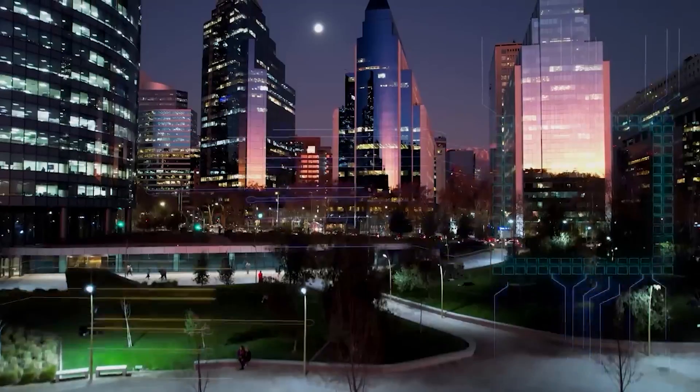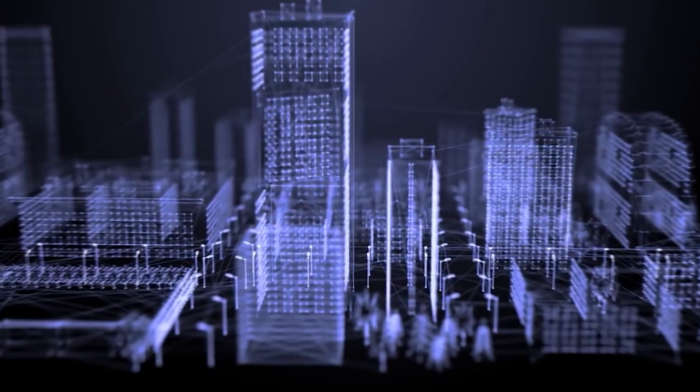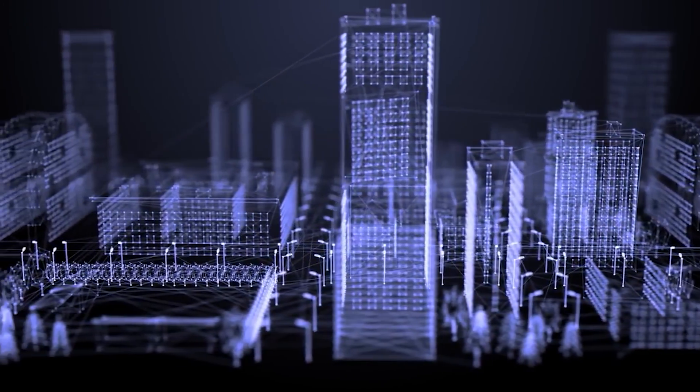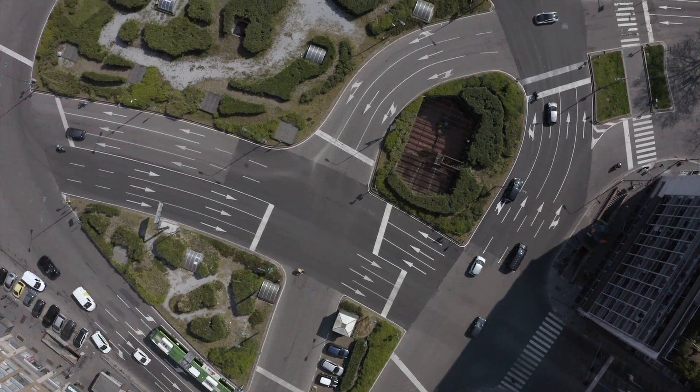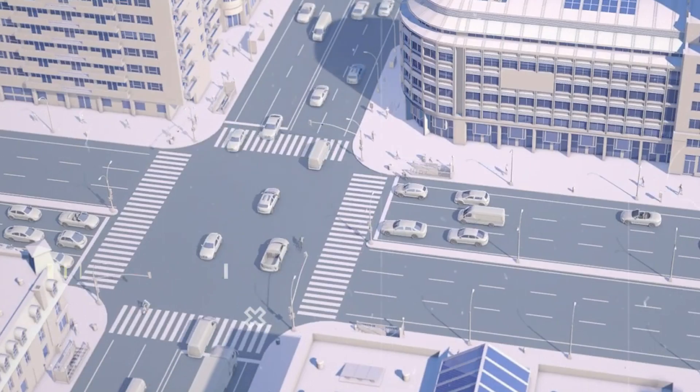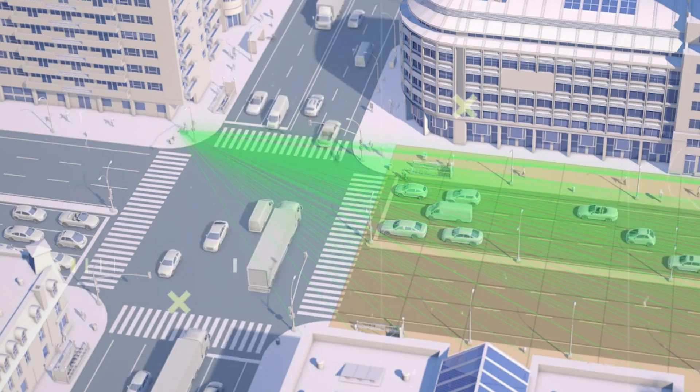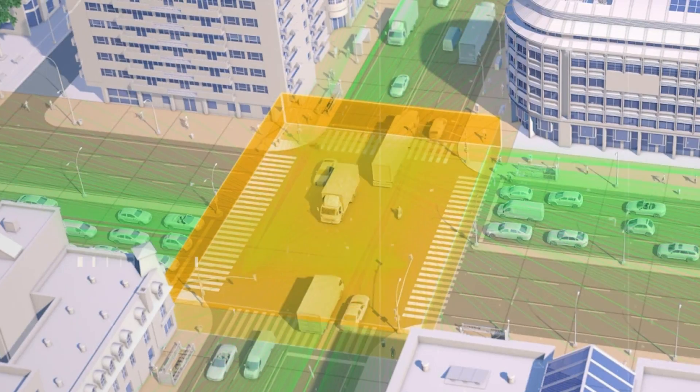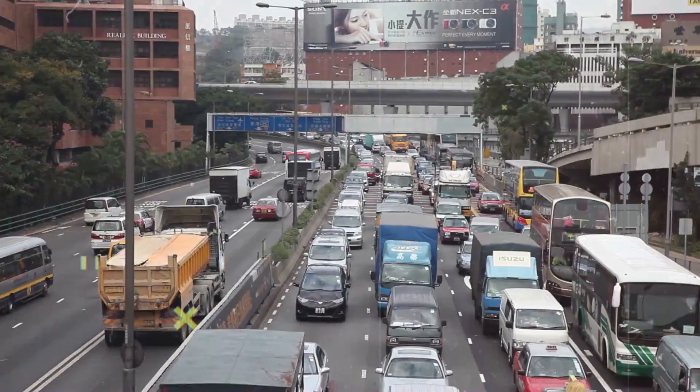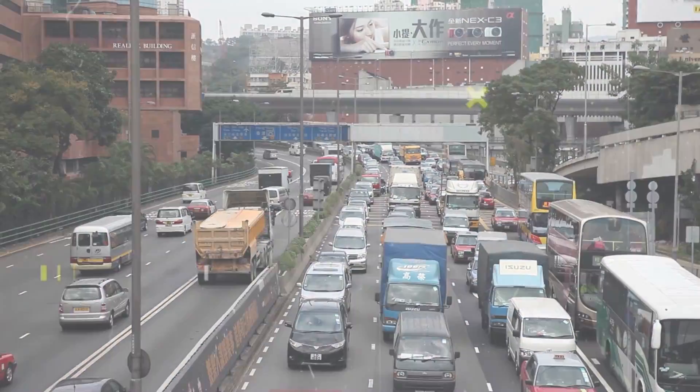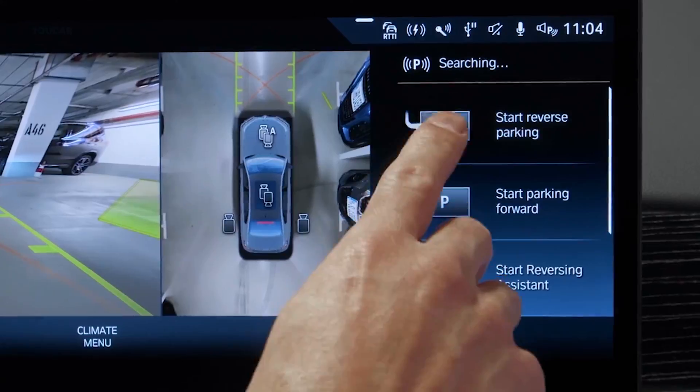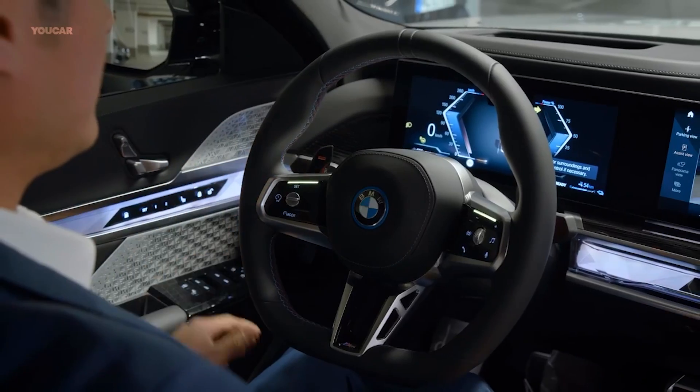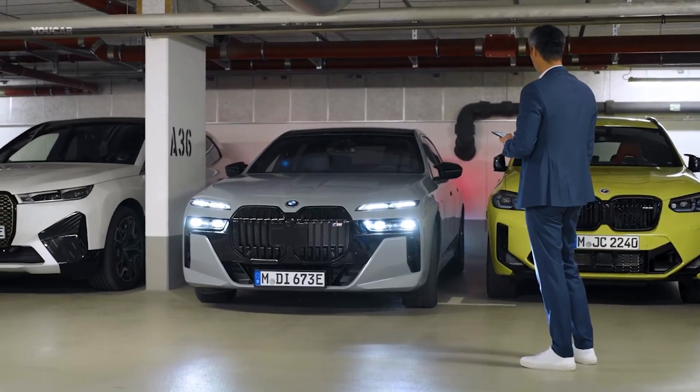At the same time, smart cities are popping up, using technology to make life smoother for everyone. Imagine driving in a city where traffic jams are rare because cars communicate with each other, coordinating their movements to avoid congestion. These cities are using advanced systems to improve transportation and make life more efficient for everyone. And with autonomous vehicles on the rise, the way we travel is changing too. No more worrying about parking or getting stuck in traffic. These vehicles can handle it all.